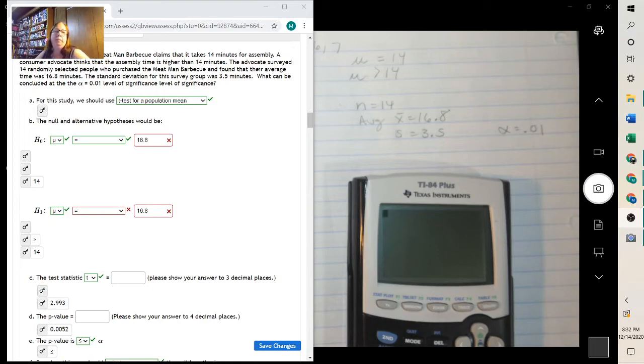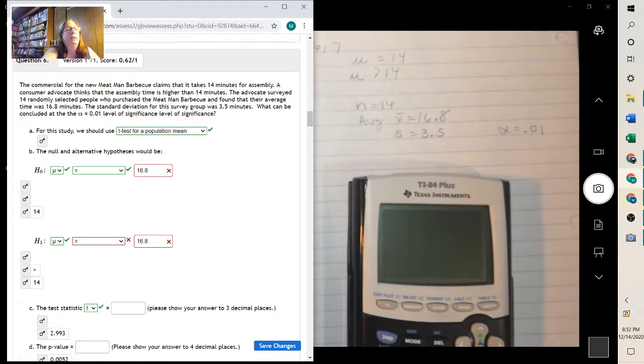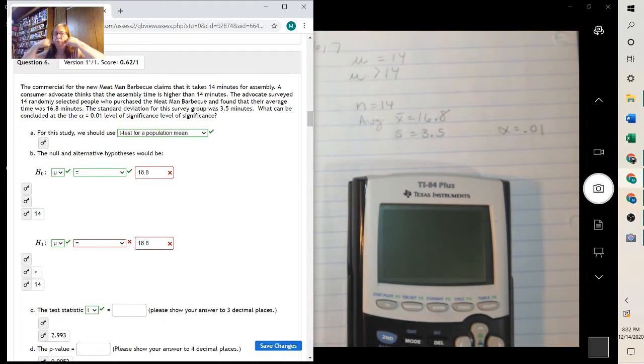Hello, I'm Mrs. J. And the question, once you had a question on number six, doing a test of a population mean. First thing is, when you read the problem, it tells us that he claims that it takes 14 minutes for assembly. A consumer advocate thinks the assembly time is higher than 14. So that's where our test is.